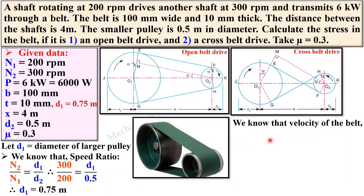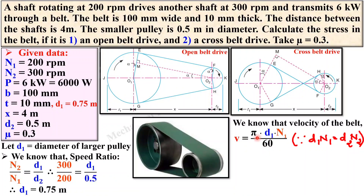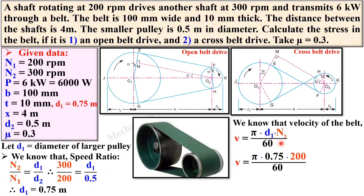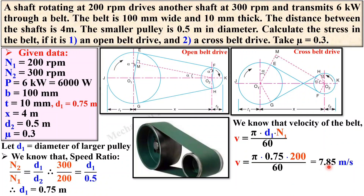The velocity of the belt is v = π·D1·N1/60. You can also write π·D2·N2/60. Putting in the values of D1 and N1, we get the velocity of the belt as 7.85 m/s. This velocity applies in both the open belt drive and the cross belt drive cases.